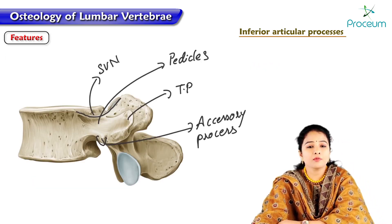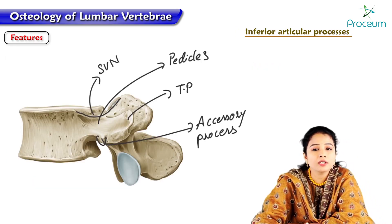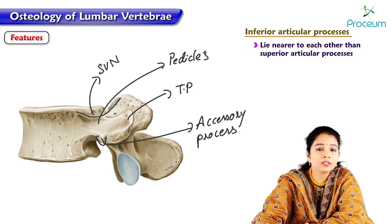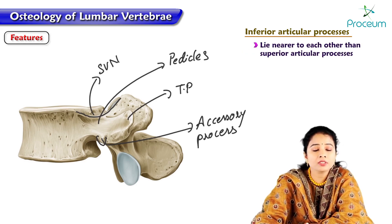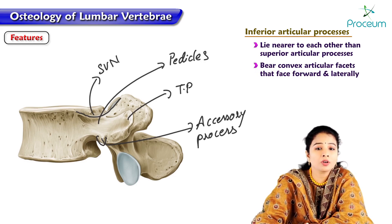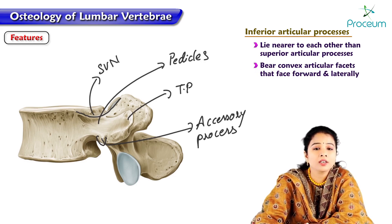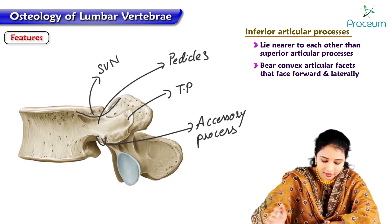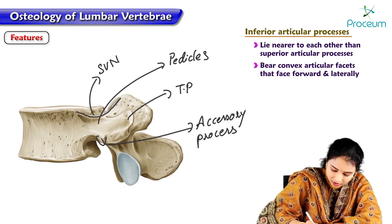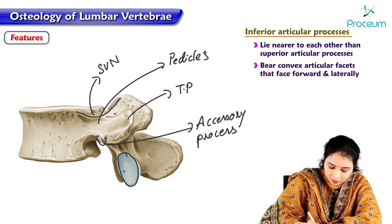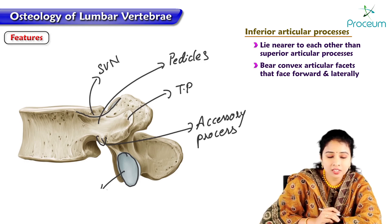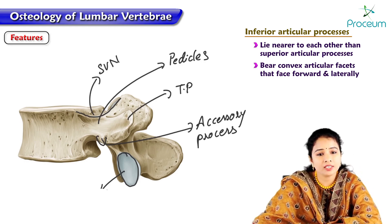Regarding the inferior articular process: the inferior articular processes lie nearer to each other than the superior articular processes, but they bear convex articular facets which face forward and laterally. The inferior articulating facets project and face laterally.